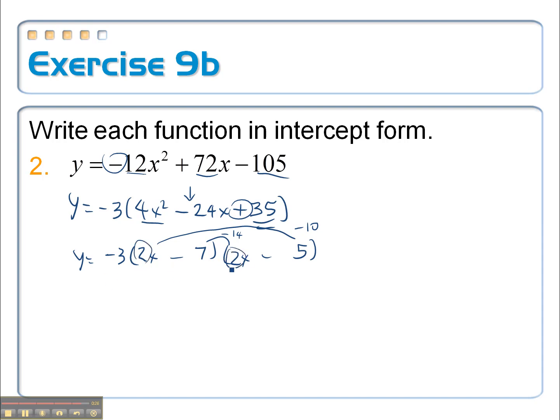But I can't have this 2 here, can't have this 2 here, so I have to factor them both out and multiply them times this negative 3. So we should have negative 12 times x minus 7/2, so I factor out the 2 from that, and x minus 5/2 for the last one.